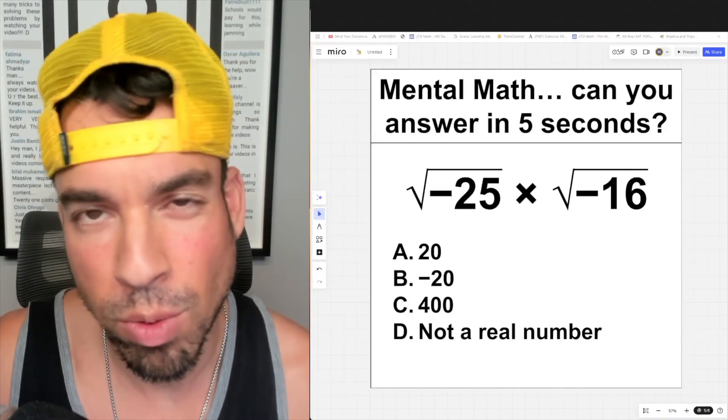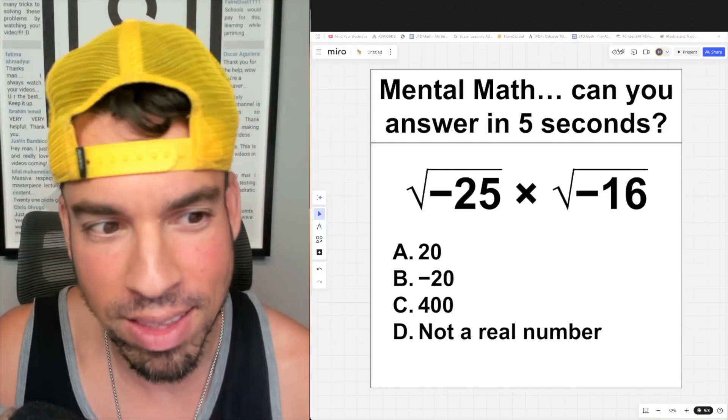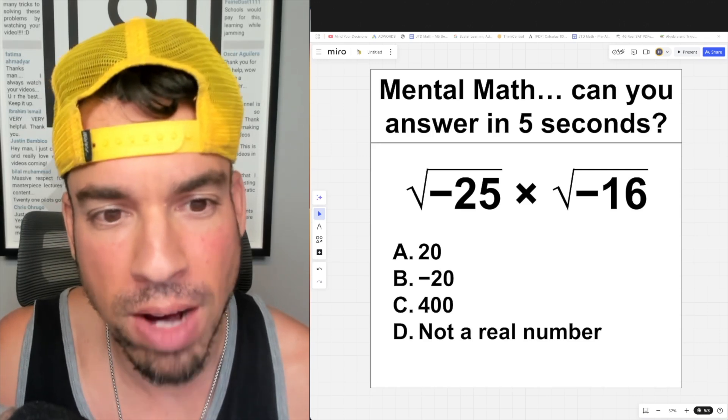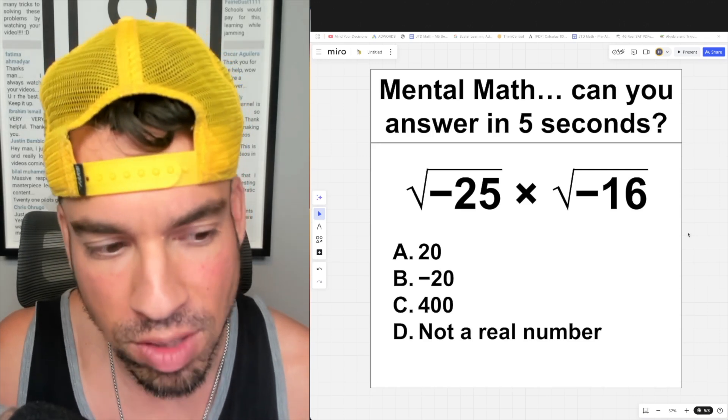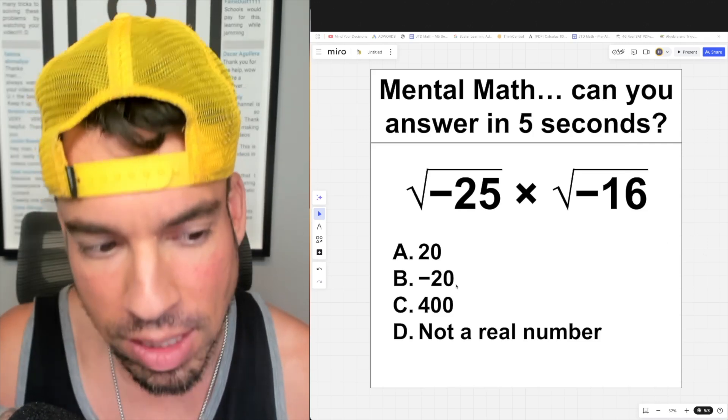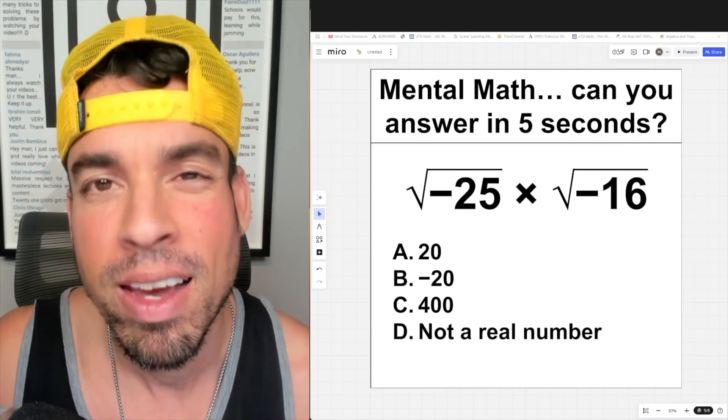What's up everybody and welcome back to another math puzzle. In this one the question is as follows: mental math, can you answer in five seconds? We got the square root of negative 25 times the square root of negative 16, and the answer choices are 20, negative 20, 400, and not a real number.